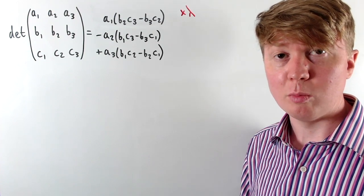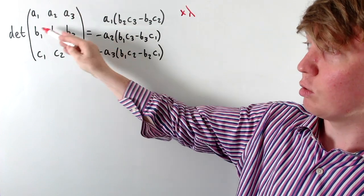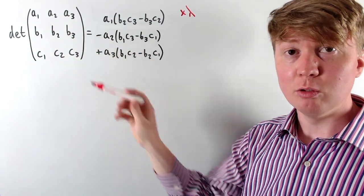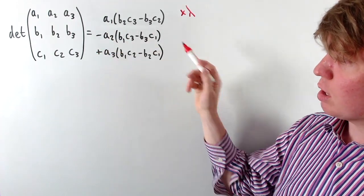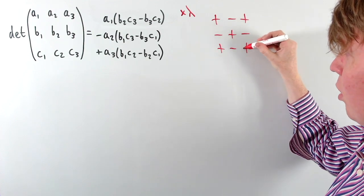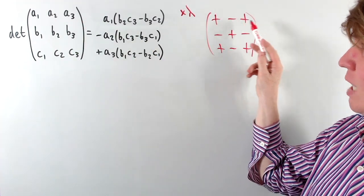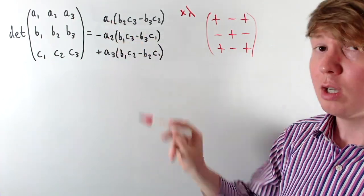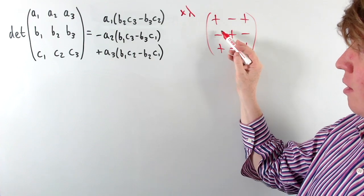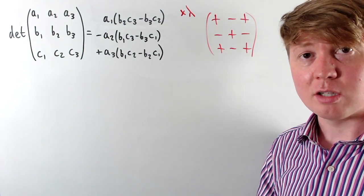The second elementary operation is exchanging two rows or two columns, swapping all the a values with all the b values and vice versa. When we move the a elements into the middle row and expand the determinant, we follow a negative, positive, negative pattern. Earlier when the a's were in the top row, we had a positive, negative, positive pattern. So swapping the top and middle rows changes the signs, giving us the negative of the original determinant.